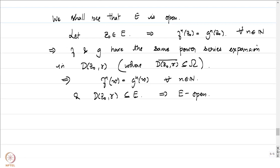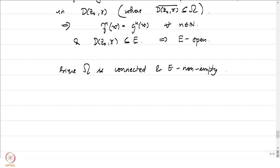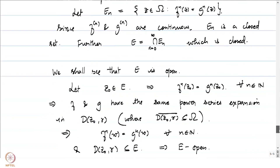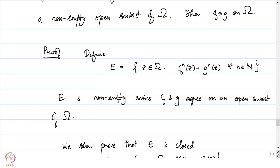By connectedness, since omega is connected and E is both open, closed, and non-empty, E must equal all of omega. This means f is identically equal to g on the entire set omega, which is what we set out to prove.